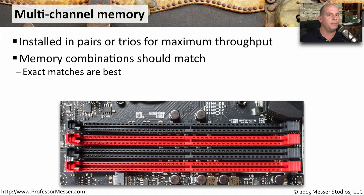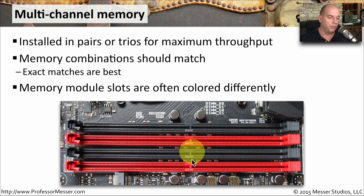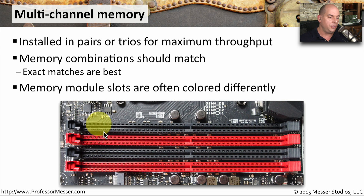You should ideally have exactly the same memory types in the different channels. The memory module channels are often color-coded, so you put the same type of memory modules in matching colors. For example, on a dual-channel motherboard, you would put one module in a black slot and the other part of the dual channel in the other black slot. So with two memory modules, install them into the two slots colored exactly the same to maximize throughput.